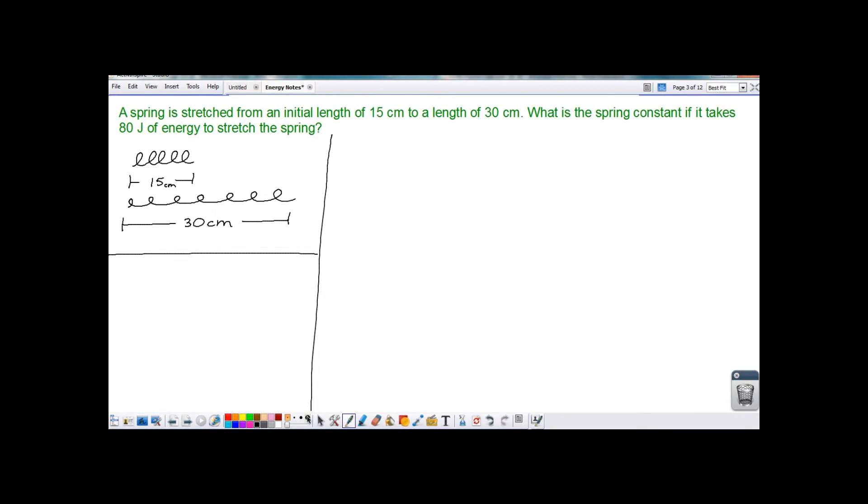So, well, what do we know? It takes 80 joules of energy to stretch the spring. We're talking about energy to stretch a spring. So we're talking about elastic potential energy, which I'm going to abbreviate with just a little lowercase letter E there. And that is 80 joules. Okay, the other variables that we're going to have are K, our spring constant, which is what we're trying to find. We don't know that.